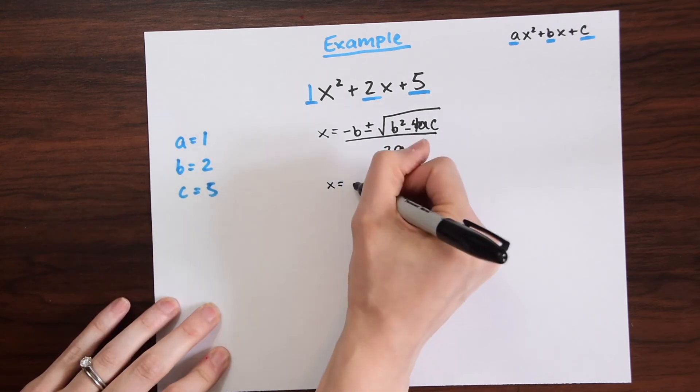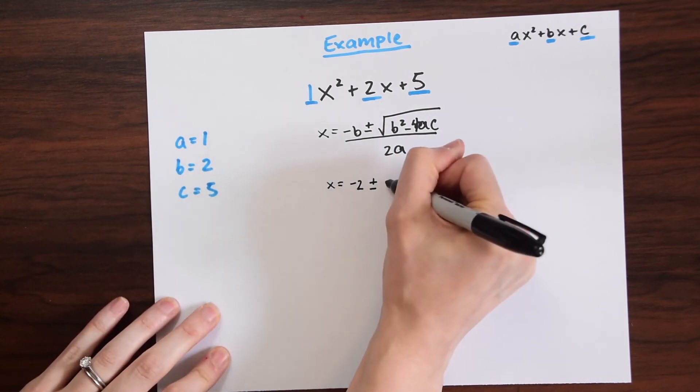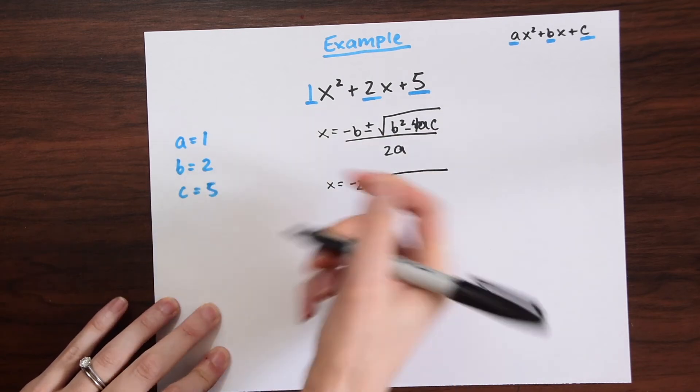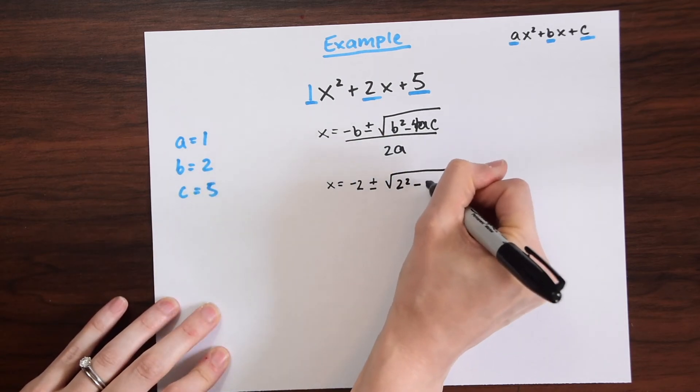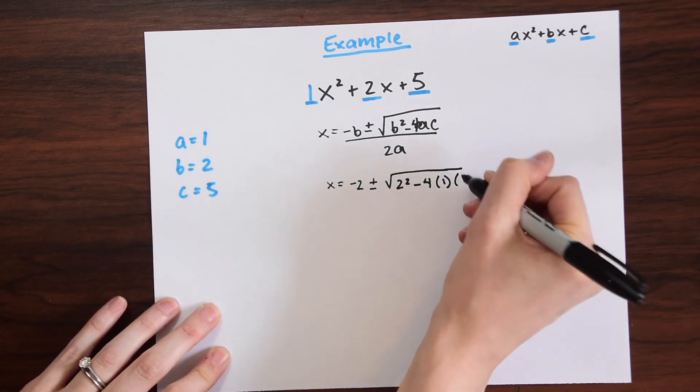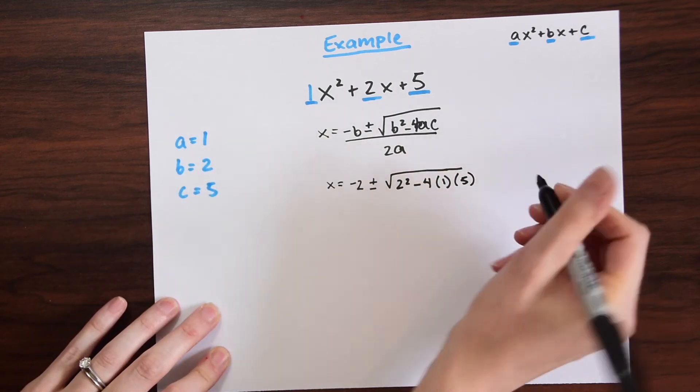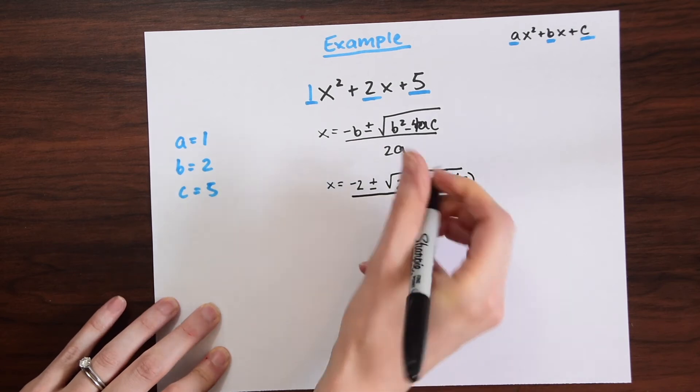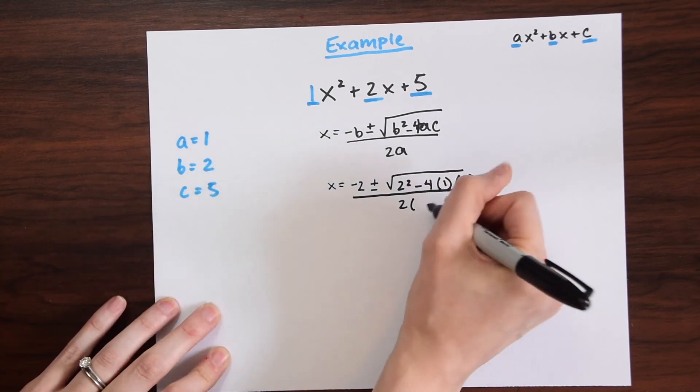Now let's fill it in. We have x equals negative b, so negative 2, plus or minus the square root of b squared, 2 squared, minus 4 times a, which is 1, times c, which is 5. And then this is all over 2 times a, which is 1.